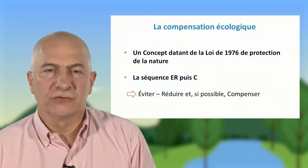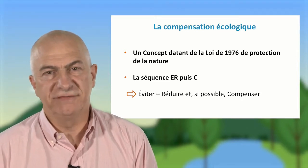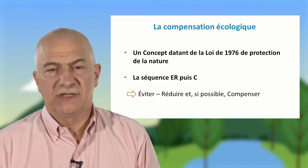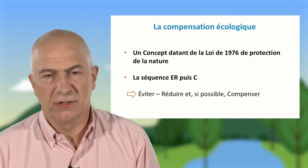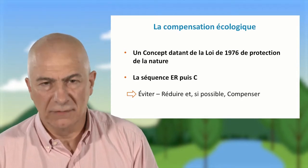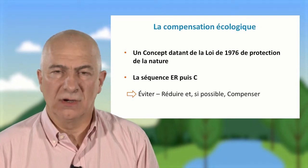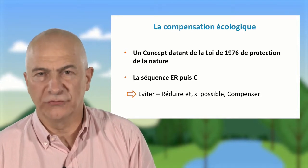Le principe de compensation indique qu'avant la mise en œuvre de ces mesures compensatoires, il y ait une étape d'abord de recherche d'évitement des impacts négatifs, et ensuite une deuxième étape de réduction des impacts du projet, de façon à arriver à la seule portion des impacts résiduels. C'est ce qu'on appelle, tel que décrit par la loi, la séquence ERC pour éviter, réduire et compenser.